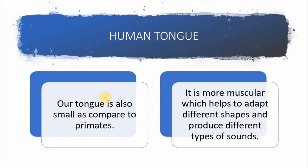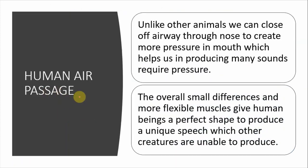Our tongue is also small compared to other primates and is more muscular, which helps it adapt to different shapes and produce different types of sounds. You can move your tongue into different positions — some people can even try to touch their nose with their tongue. This muscular flexibility is greater compared to other animals.